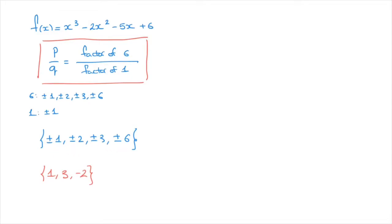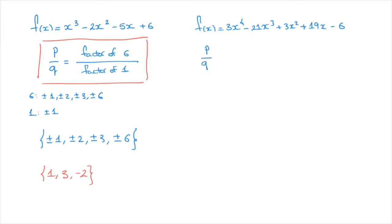Another example could be the polynomial function defined as f of x equals 3x to the power of 4 minus 21x cubed plus 3x squared plus 19x minus 6. Again, say we're interested in finding the roots of this polynomial function. The rational root theorem allows us to state that if this polynomial has any rational zeros, then we must be able to write them as p over q, where p must be a factor of the negative 6 at the end, and q must be a factor of the leading coefficient, which in this case is 3.